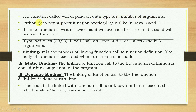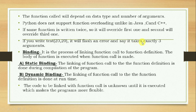However, Python does not support function overloading, unlike Java, C, and C++. If the same function is written twice in Python, the second definition will override the first. The most recently defined function overrides all others with the same name. So if you call test with two arguments but only the three-parameter version is active, Python will flash an error saying it takes exactly three arguments.